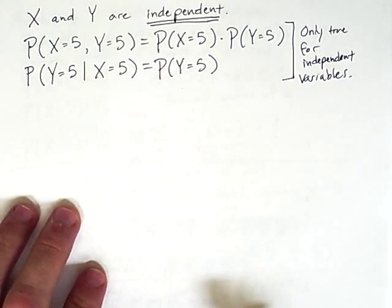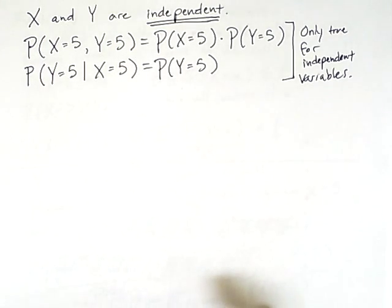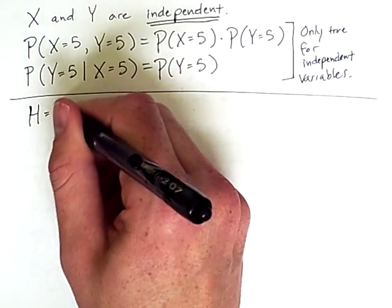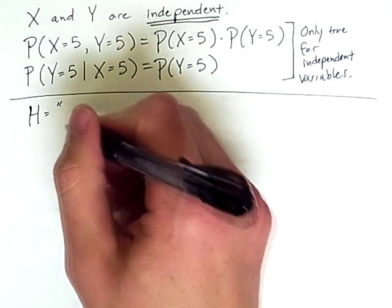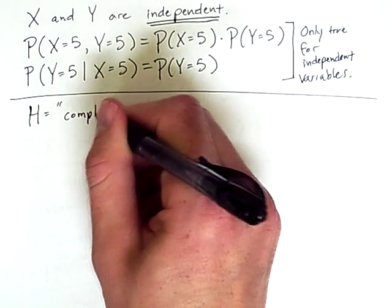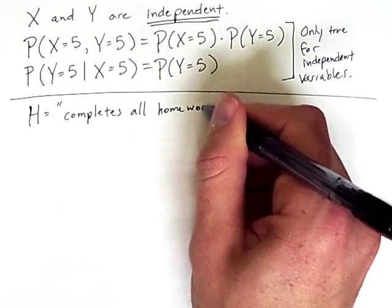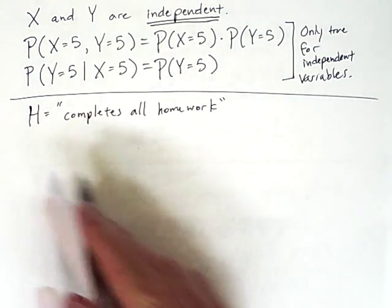So let's look at what would happen if we had two variables that were not independent. Specifically, I'll define H to be a random variable of whether or not someone completes all homework. Now, you may say that you shouldn't leave this up to chance. It's not really a random variable, and you could be justified in that assumption, but randomness is a way also of modeling uncertainty. And from my perspective, whether or not students complete homework can sometimes be considered a random variable.